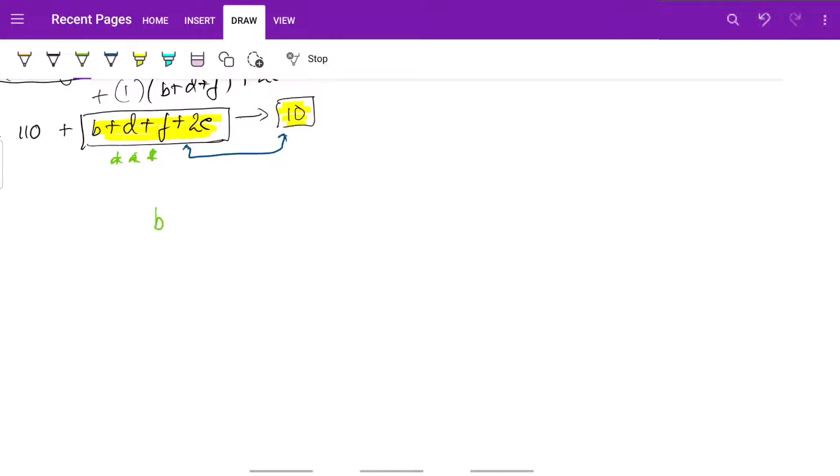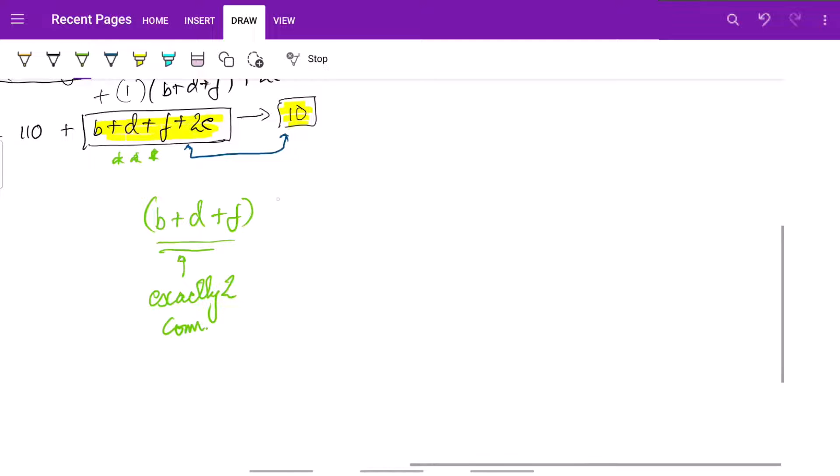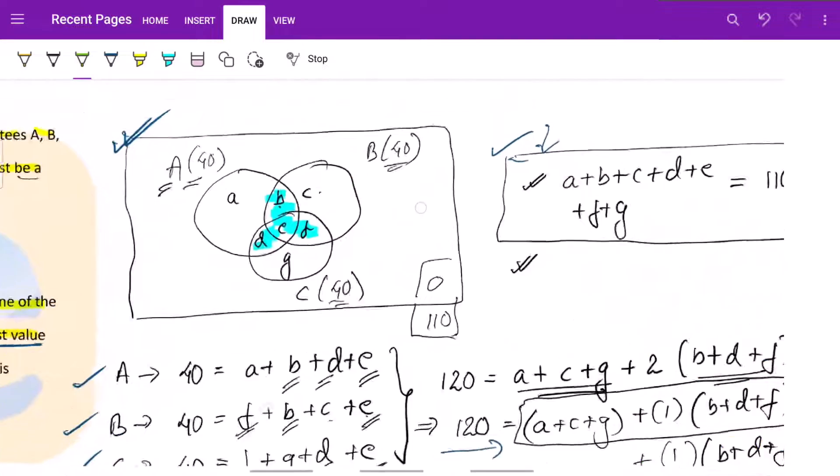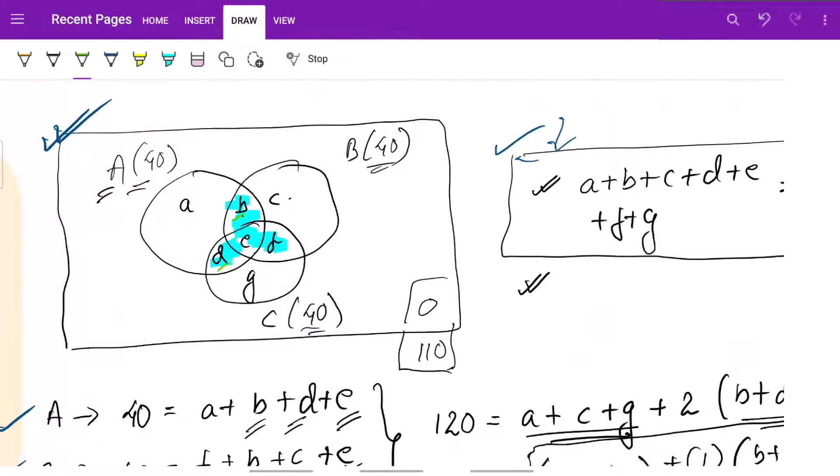So what do we have basically, b plus d plus f, this is one part and if you see in the Venn diagram, this is basically exactly 2 committees plus 2 times e and what is e, exactly 3 committees, and this is equal to 10. b, d and f are exactly 2 committees, e is exactly 3 committees.